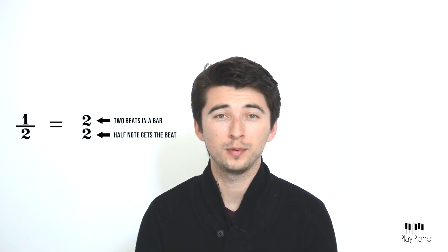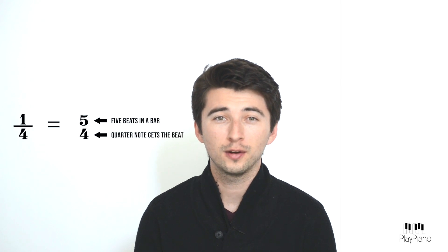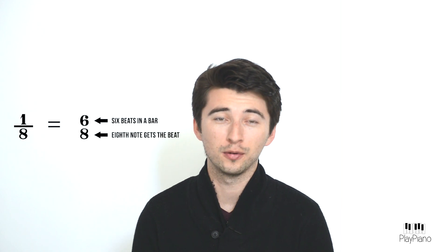How about this fraction? Yes, it's one half. So, if a two was on the bottom of a note, an eighth note would get the beat. This fraction? That's right, it's an eighth. So, if an eight was on the bottom, an eighth note would get the beat.